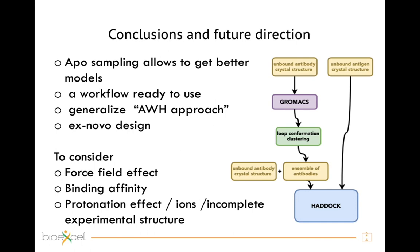We are currently working to incorporate this entire workflow into a Jupyter notebook so it is ready to use for everyone. We will generalize the accelerated weighted histogram approach and aim to apply it to de novo antibody design. There are still aspects to address: we have only run with one force field — CHARMM36 — and we may want to consider binding affinity calculations to extract free energy differences and improve binding affinity.